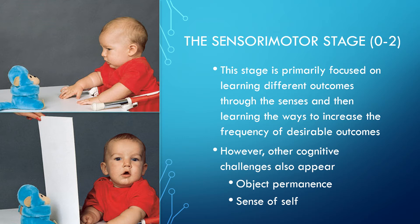In this introductory class, I want to focus on two broad picture ideas that Piaget said we were also developing during the sensorimotor stage: something called object permanence and a sense of self. Object permanence was one of the first ideas that really put Piaget's name on the list of famous psychologists. It was this idea that we had to understand that objects continue to exist and retain their properties even when we couldn't see them.